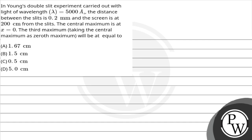Hello, let us read this question. In Young's double slit experiment, carried out with light of wavelength lambda equals 5000 Angstrom, the distance between the slit is 0.2 mm and the screen is at 200 cm from the slit. The central maximum is at x equals 0. The third maximum, taking the central maximum as the zeroth maximum, will be at?